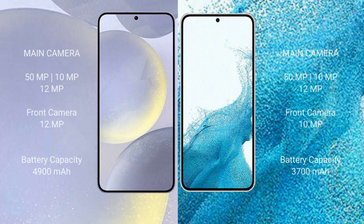The Samsung Galaxy S24 Plus features a triple camera setup: 50MP plus 10MP plus 12MP, and a 12MP front camera. It has a 4900mAh battery with 45W fast charging support. The Samsung Galaxy S22 has a 3700mAh battery with 25W fast charging support.